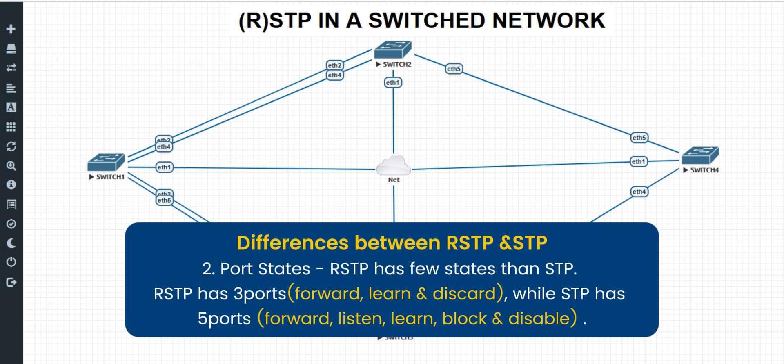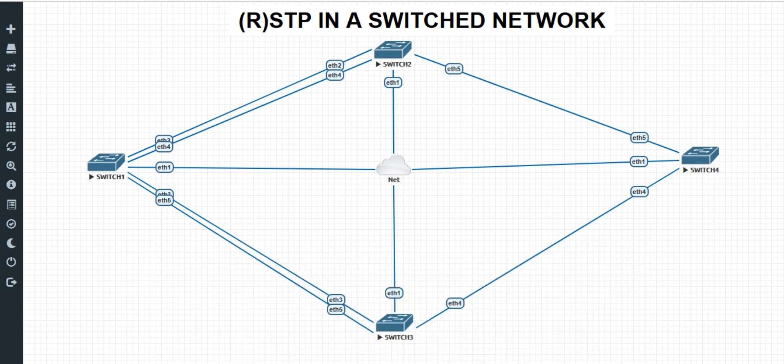RSTP has three port states while STP has five. For RSTP, the port states are forwarding, learning, and discarding. While for STP, which has five, we have forwarding, listening, learning, blocking, and disabled.